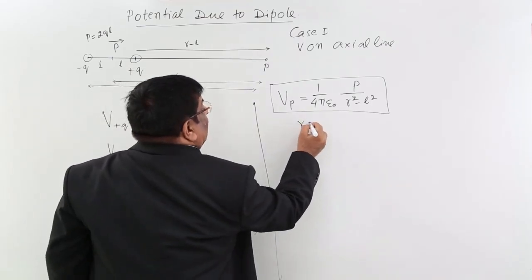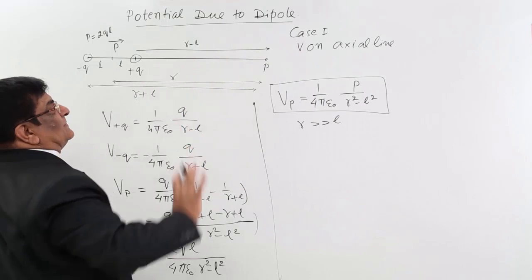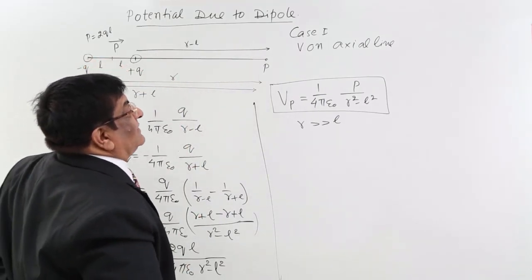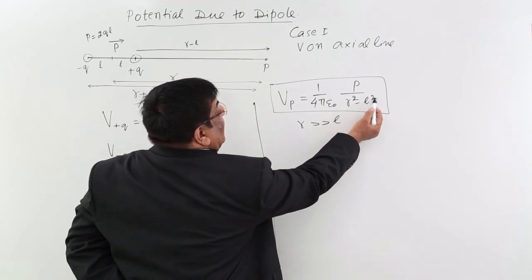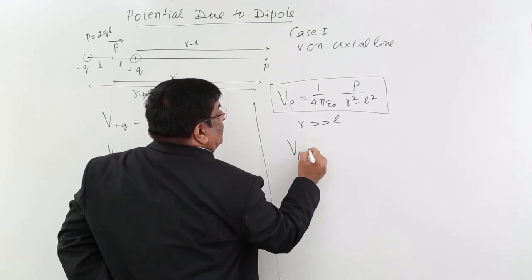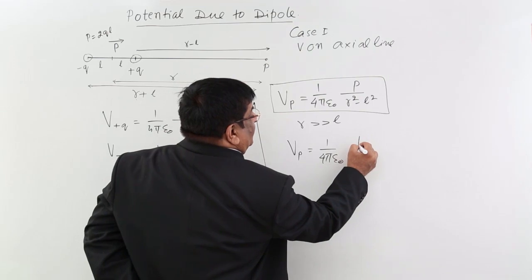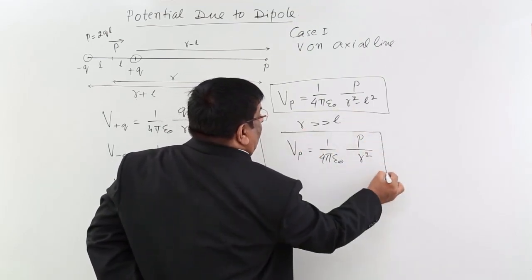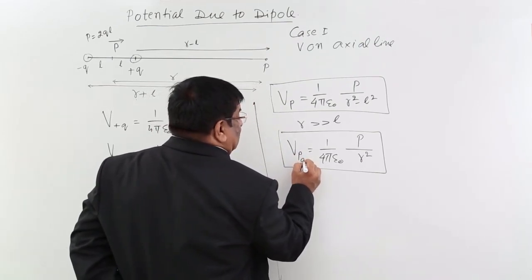Now in the case where R is very large compared to L, which is the general case — R is always much larger than L — we can neglect L² in the denominator. Then the formula simplifies to V = (1/4πε₀) × P/R². This is the potential on the axial line.